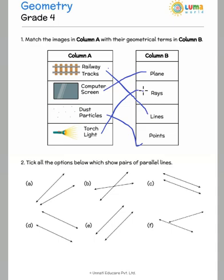Take all the options below which show pairs of parallel lines. Parallel lines are lines which are drawn in such a way that they never meet at all. Here if you see these lines, when I extend them they will definitely meet. This is not a set of parallel lines. These are intersecting lines.